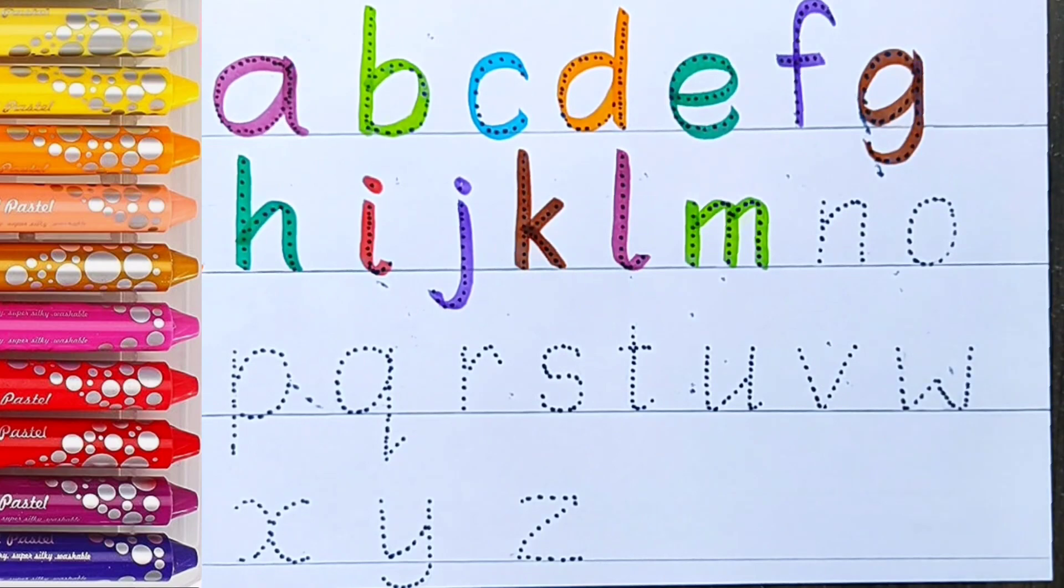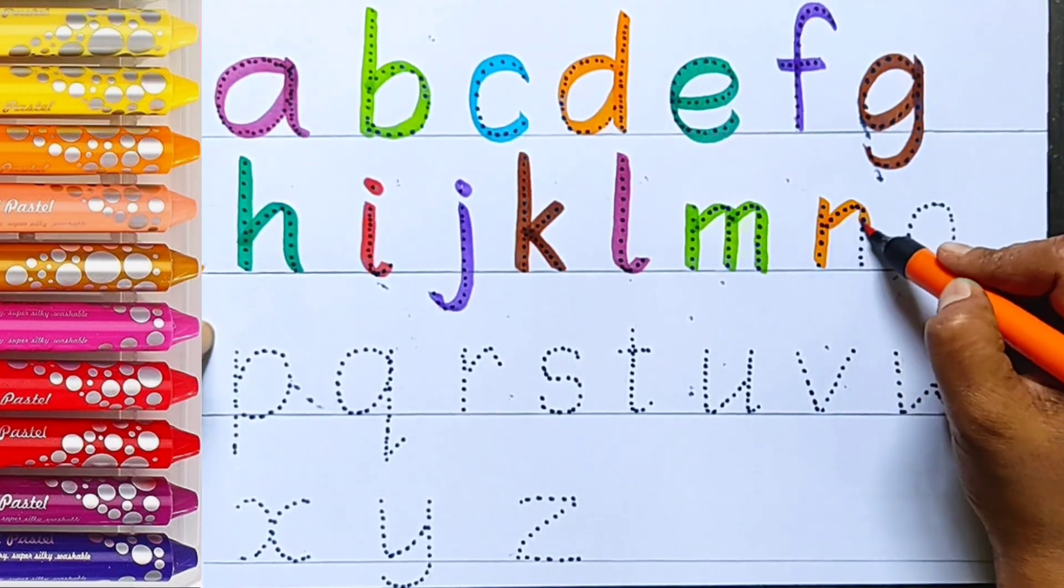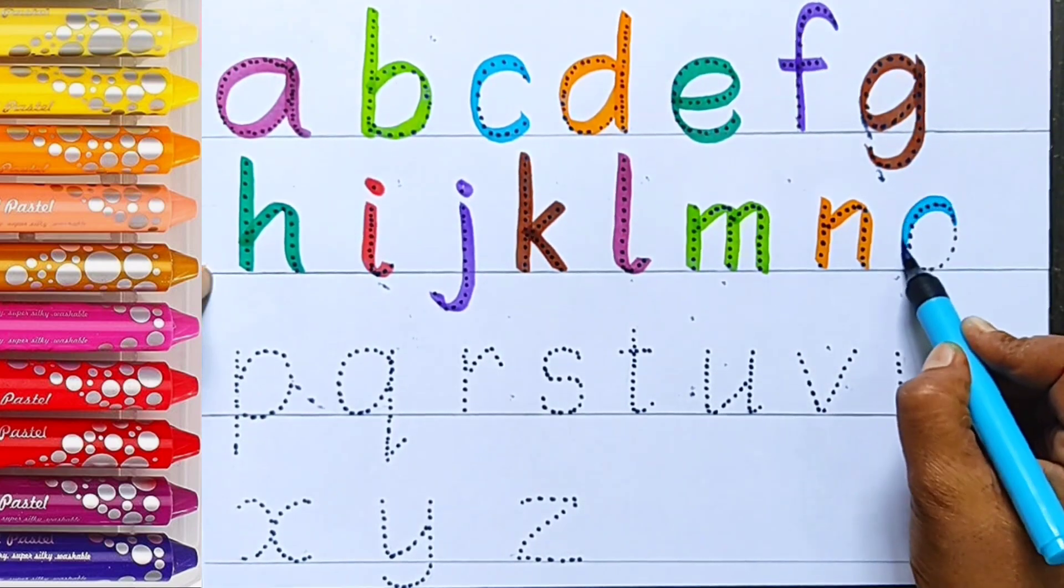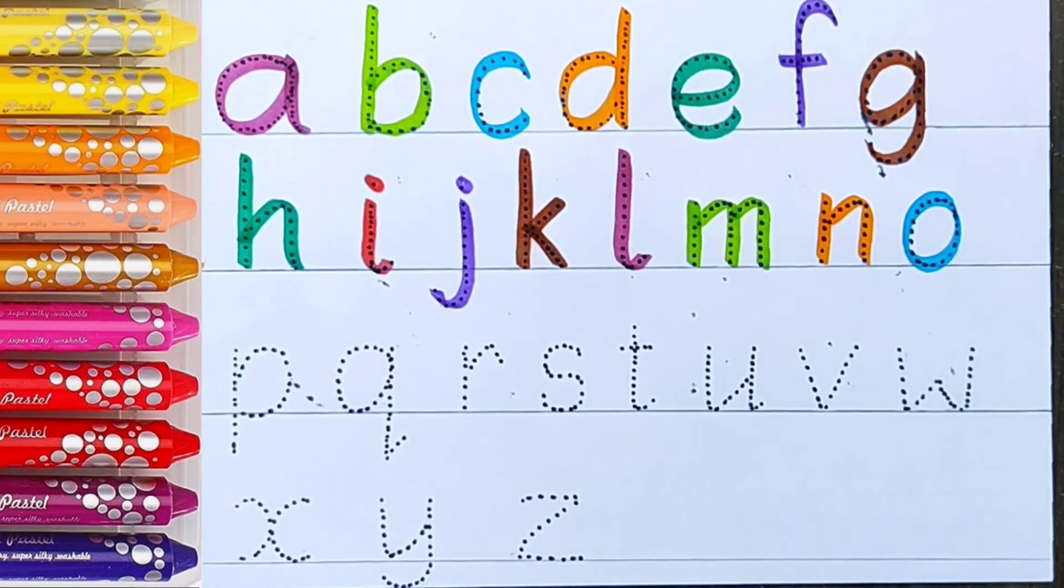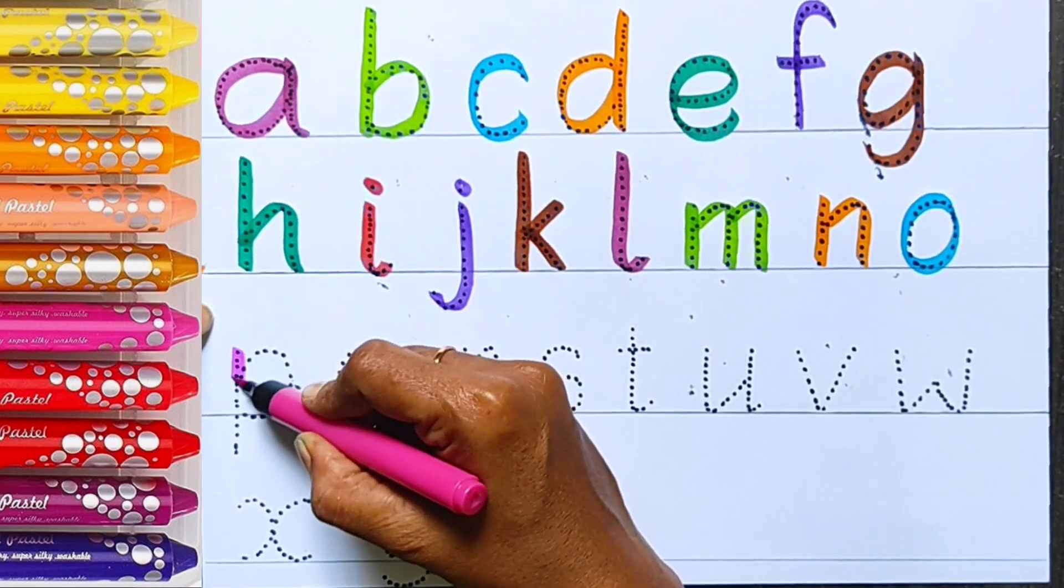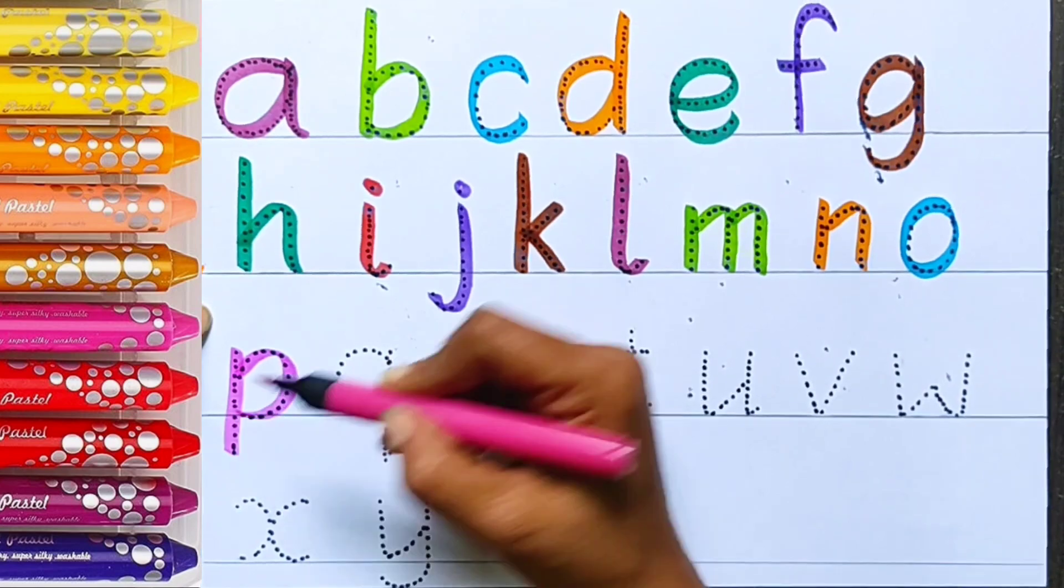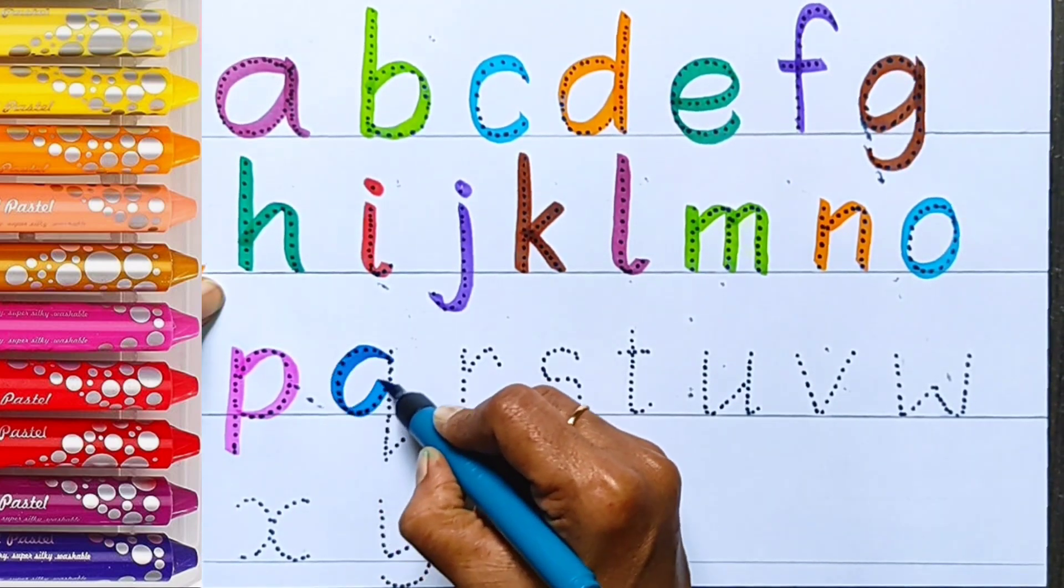M, M for mango. N, N for nest. O, O for orange. P, P for peacock.